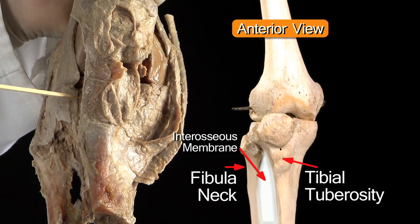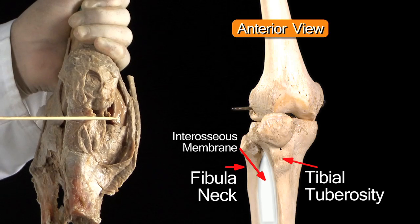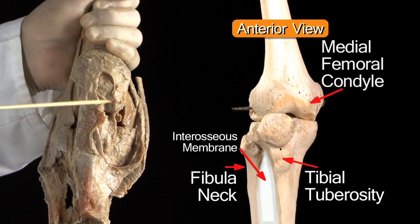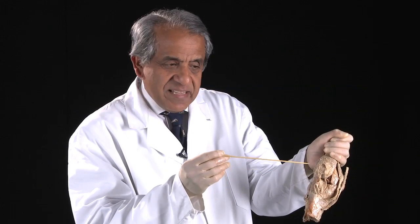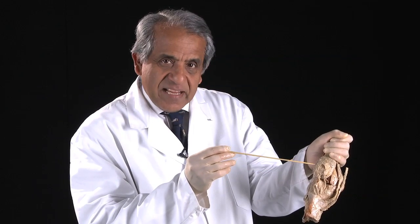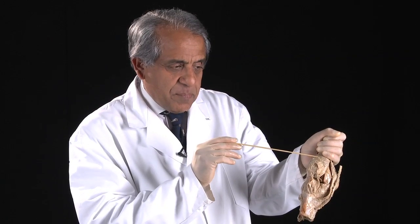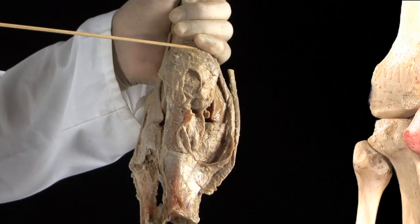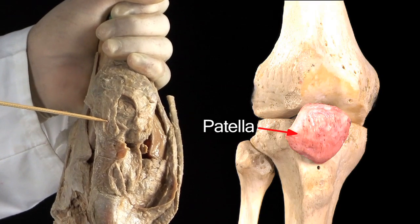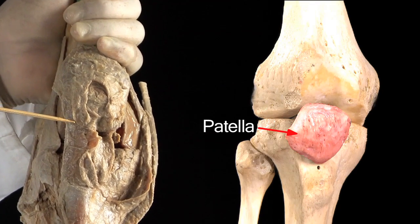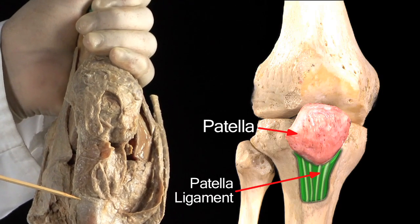Above the upper surface of the tibia are the two femoral condyles, the medial and the lateral femoral condyles. Covering the anterior aspects of the distal femur is the patella, which I'm pointing to here. Coming off from the inferior aspect, or the inferior pole of the patella, is the patella ligament on its way to the tibial tuberosity.